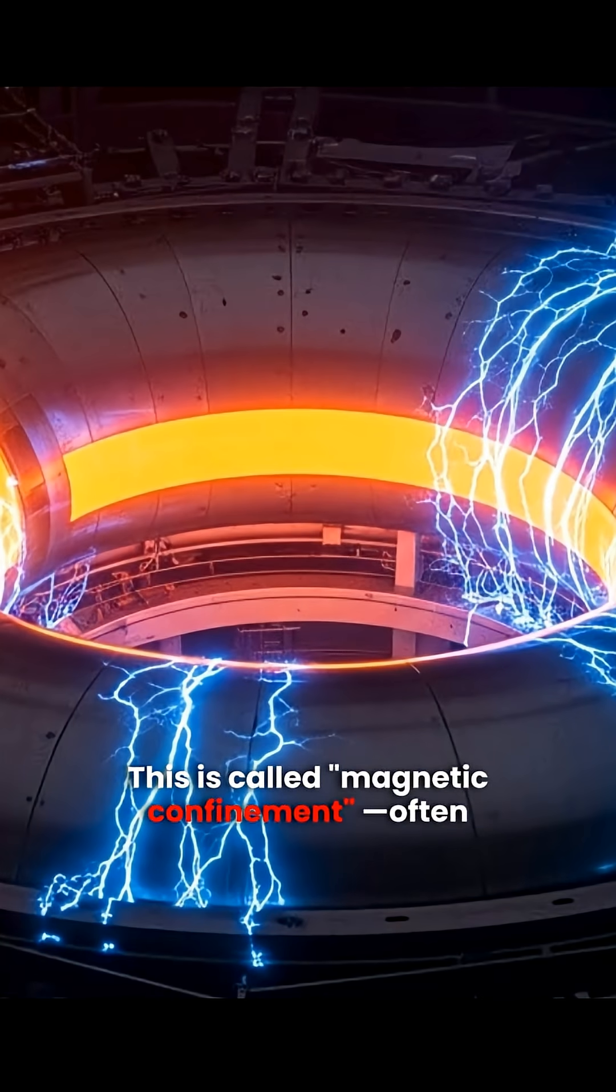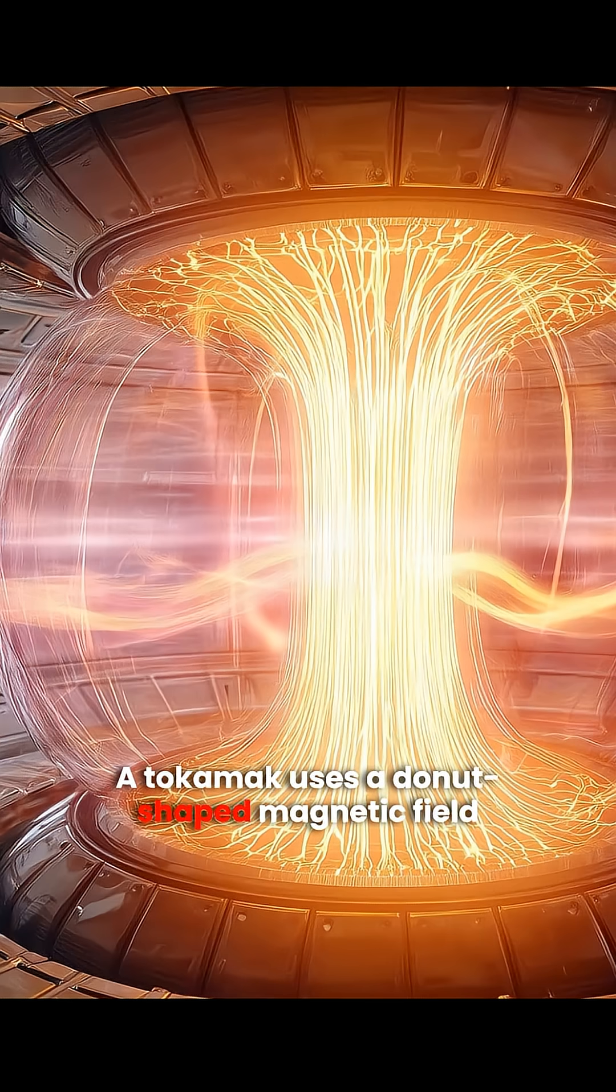This is called magnetic confinement, often described as a magnetic bottle. A tokamak uses a donut-shaped magnetic field to confine plasma in a closed path.